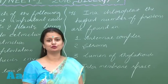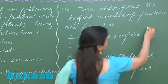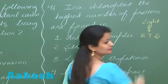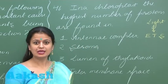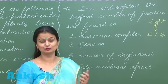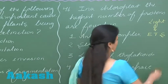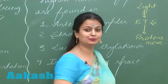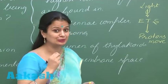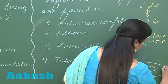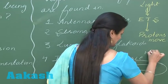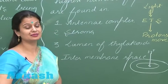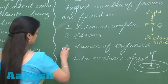Question 46 asks about the photosynthetic electron transport system (ETS). Due to light energy, electrons flow in the ETS. As the electrons move, there is also movement of protons. The protons move from the stroma to the thylakoid lumen. So the concentration of hydrogen ions in the thylakoid lumen increases. The right answer for this question is option number 3.